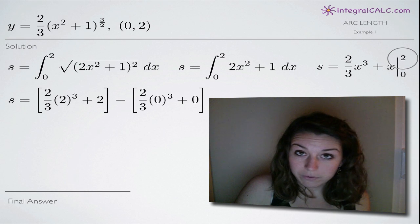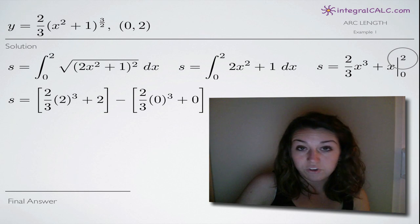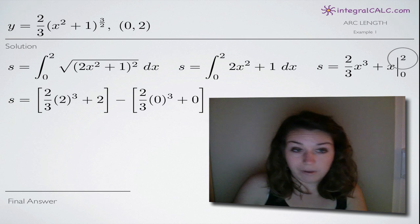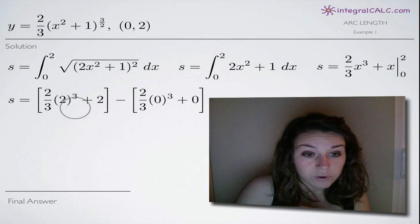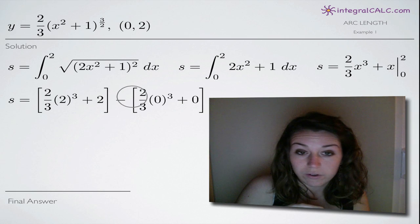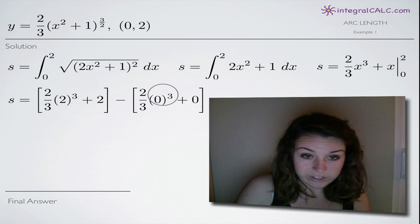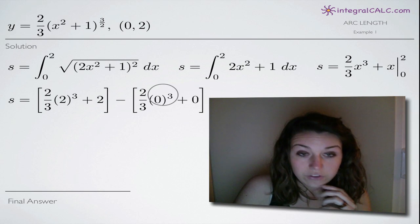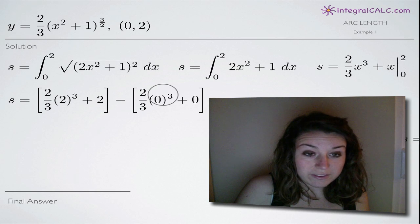But remember with definite integrals, we always plug in the top number first and then always subtract and then plug in the bottom number. So you can see that we've plugged in 2 to our entire function here and then we subtracted here in the middle and then plugged in the bottom number which is 0 in our case.